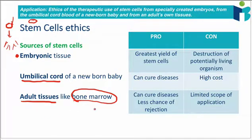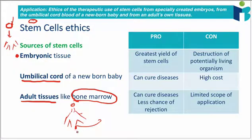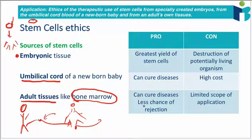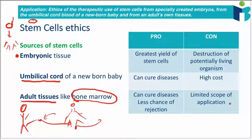And then finally, adult tissues like bone marrow — these can cure diseases. There's a lower chance of rejection, which means that if you've taken the stem cells from the leukemia patient themselves before giving them back after chemo, the body is probably going to respond just fine. But if you take stem cells from another person and inject them into the patient, there's a chance the body won't accept them and might destroy them. So the key is less chance of rejection and no destruction of potentially living organisms. On the other side, these adult tissues aren't as potent as the embryonic ones, so you can't apply them to as many conditions. You just have to be able to argue both sides of the discussion.